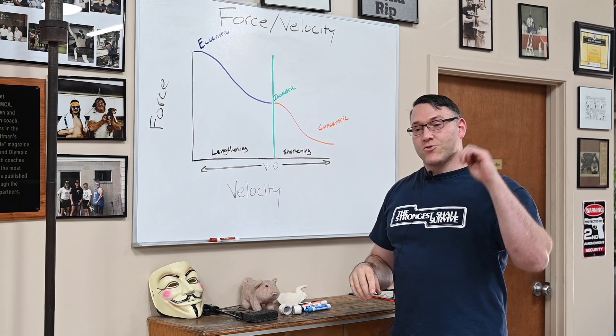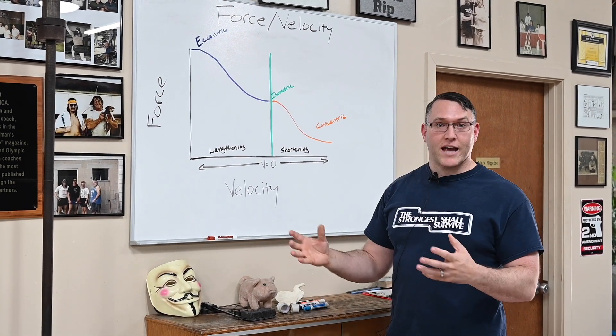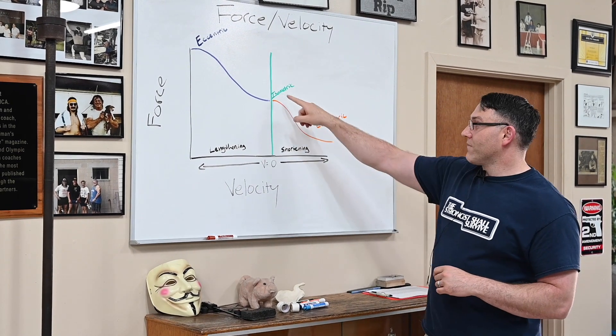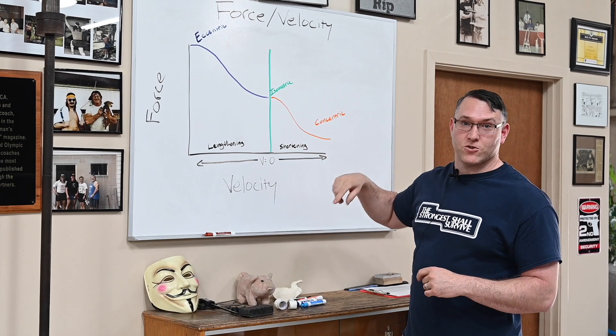Eccentric muscle actions are our strongest muscle actions, isometric would be our next strongest in terms of force production capability. Obviously because there's no movement occurring, velocity is going to be zero when we have an isometric muscle action.